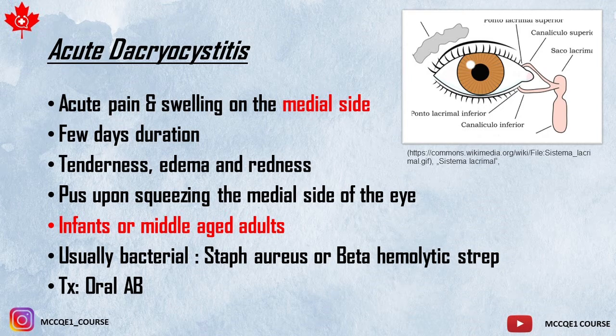Usually other examinations are normal, and it could be a pediatric case — seen in infants or middle-aged adults. The diagnosis would be acute dacryocystitis, which is an inflammation of the lacrimal duct and its lacrimal sac. That's why it is seen over the medial canthus.